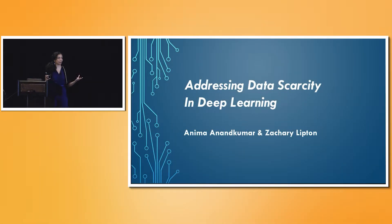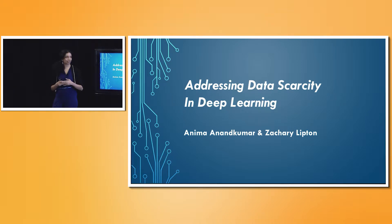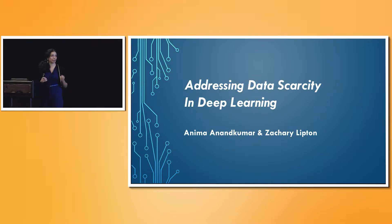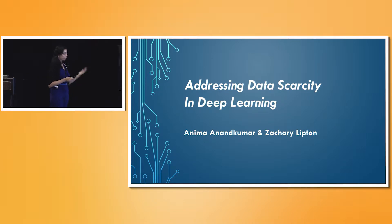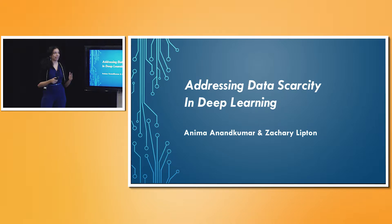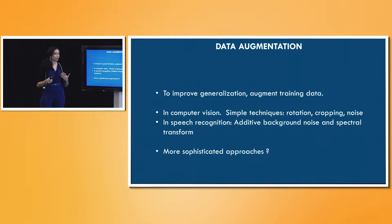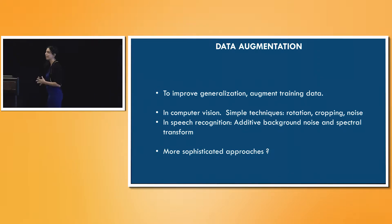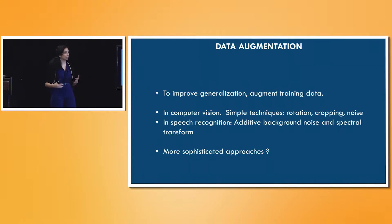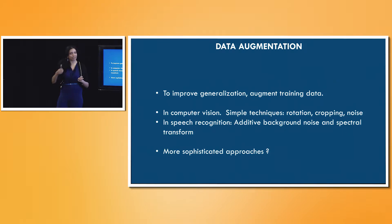What Zach gave you is an overview of how data scarcity can be tackled, and how active learning is emerging as a potentially practical and useful technique for settings where we don't have lots of data. Today what I want to talk about is the other side of the puzzle, which is to think about generalization.